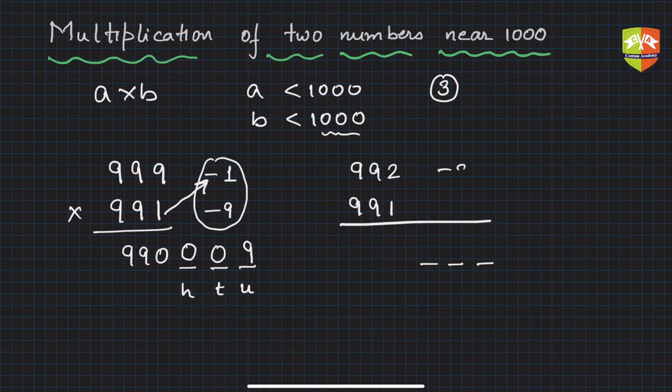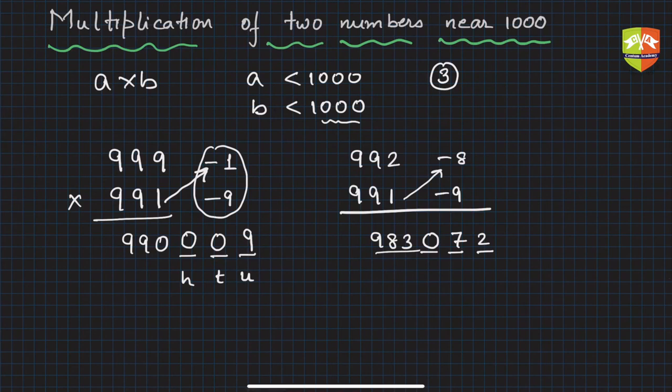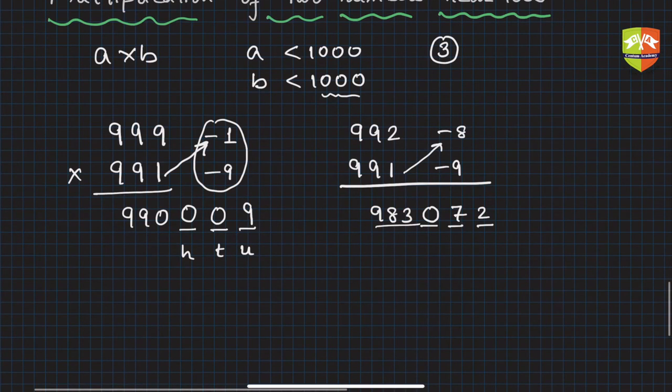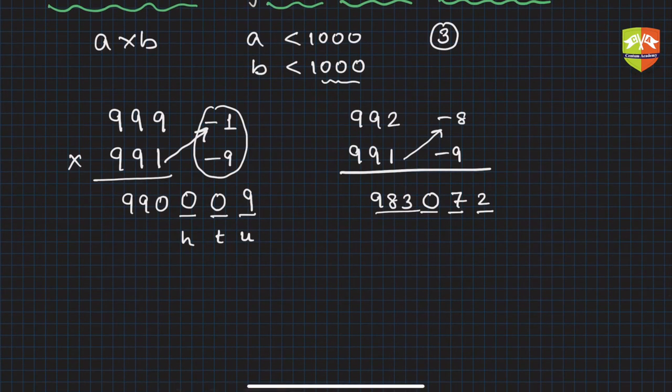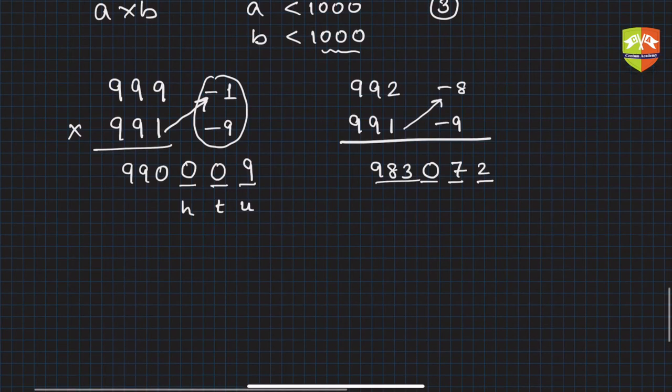Here it's -8 away and here it's -9. -9 × -8 is 72, so write 72. But one place is empty, so write 0. That's it. And simply, 991 - 8 is 983. So this is the product. Isn't it fast enough? Once you're thorough, familiar, and in practice, you'll be able to do it much faster. So 983072 is the product.